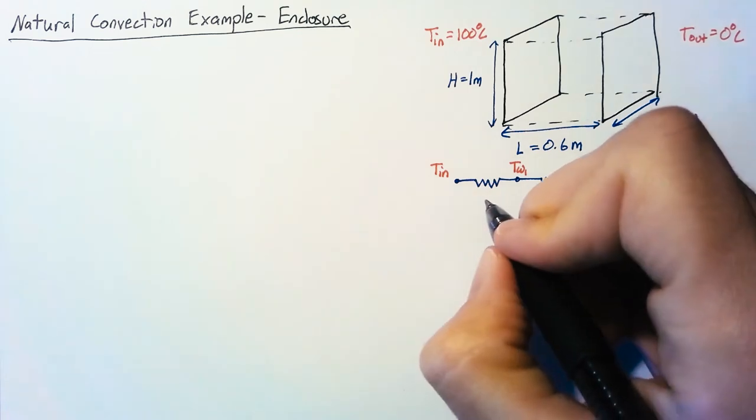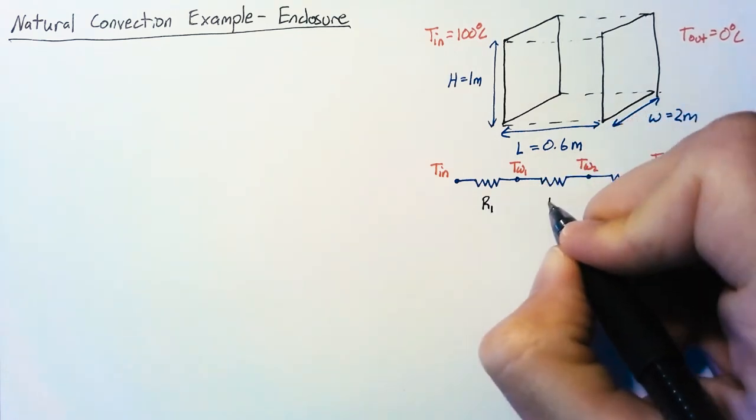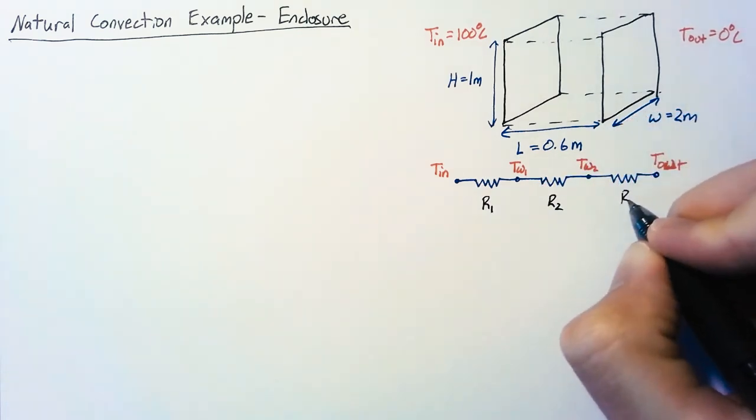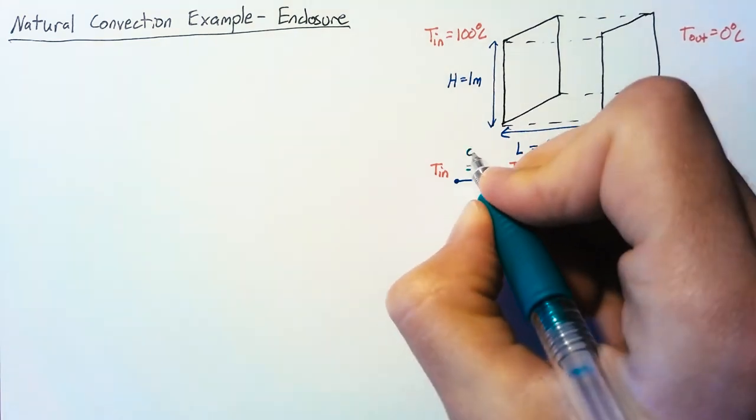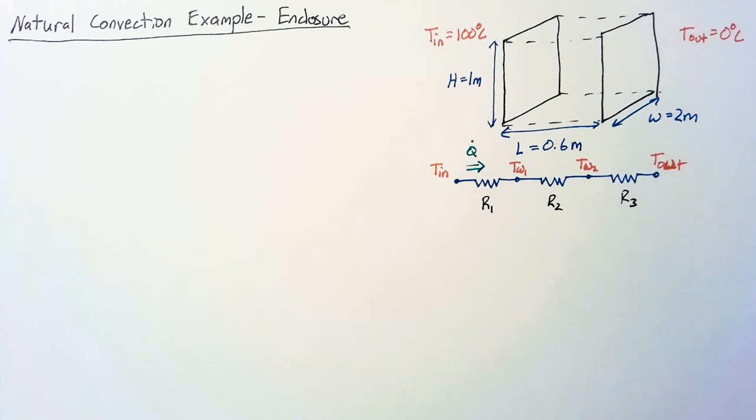So as we're referring to them this is going to be R1, R2, and R3. And of course our heat transfer is moving from hot to cold so it'll be moving from left to right.